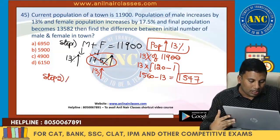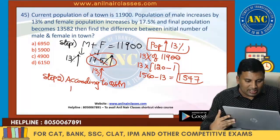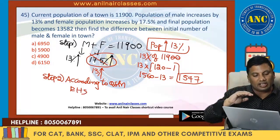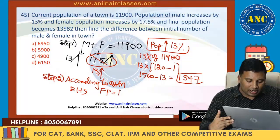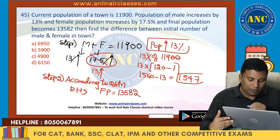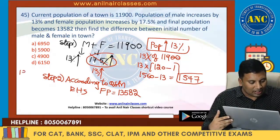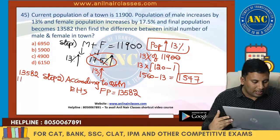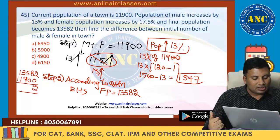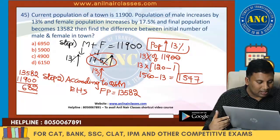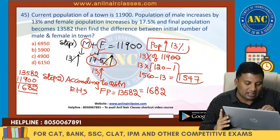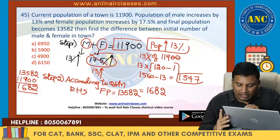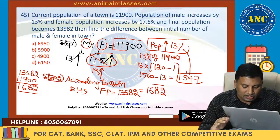Step number 2. According to the question, population is increasing by 13% for male and 17.5% for female. Final population is 13,582. So from 13,582 minus 11,900, how much is the increase? That is 1,682. But if it were increasing by 13%, I would have got 1547. How come I got 1,682?